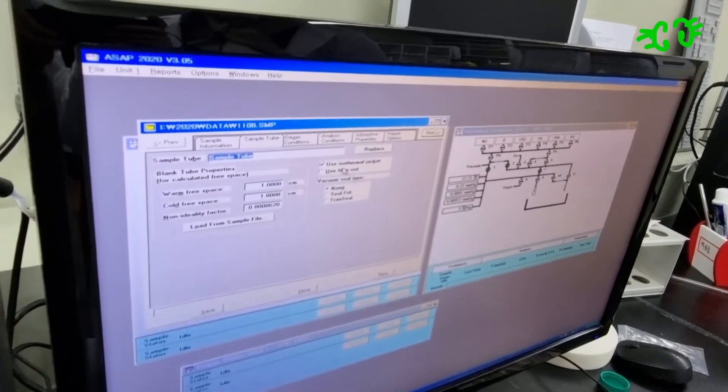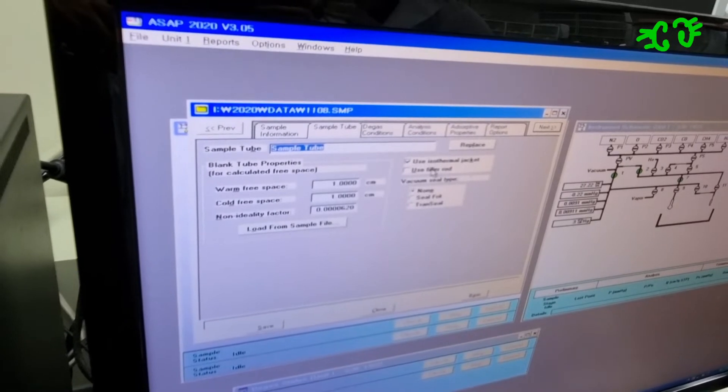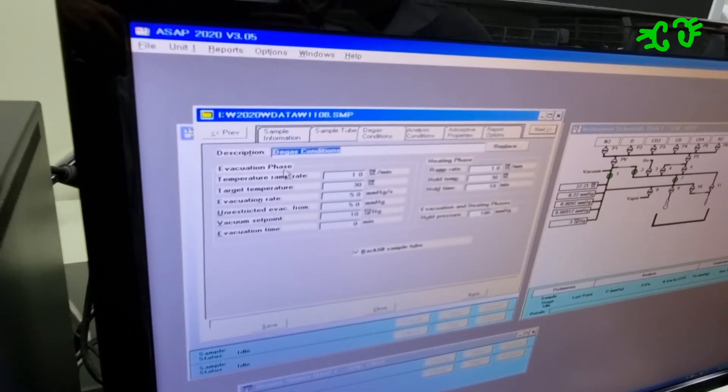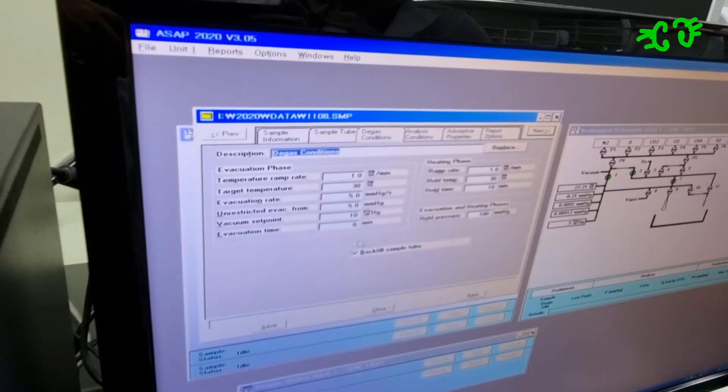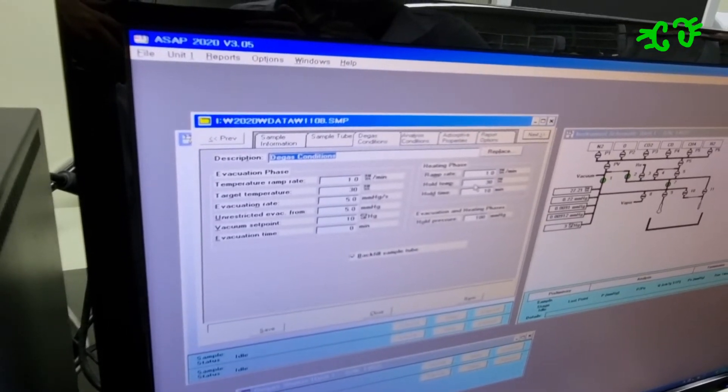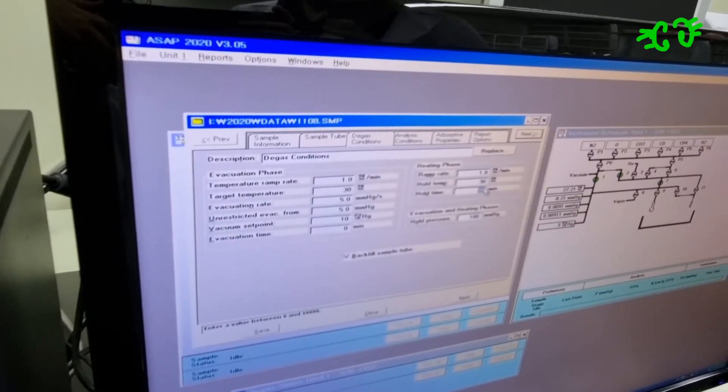About the sample tube, you should click the R2 thermal jacket. If you use a filler rod, you should check here. For degassing conditions, you can input the conditions you want. You usually replace this or this.